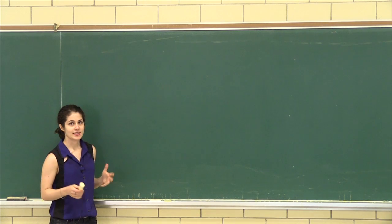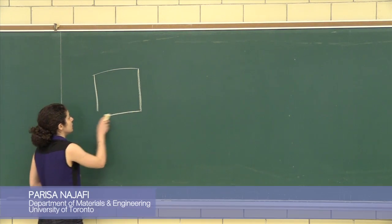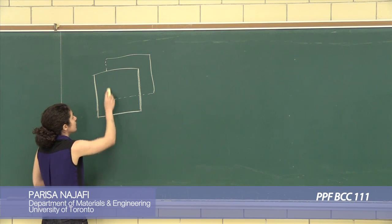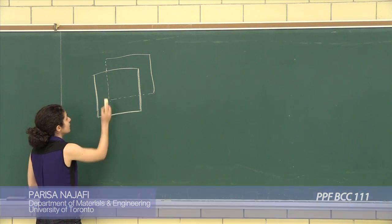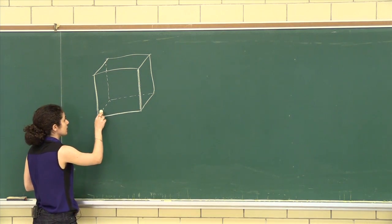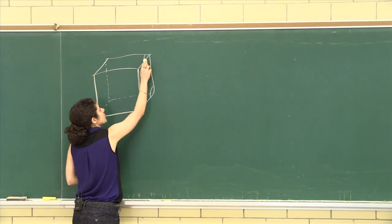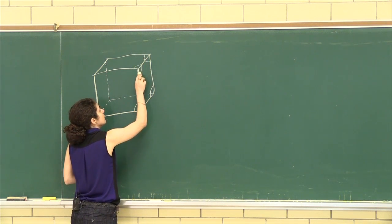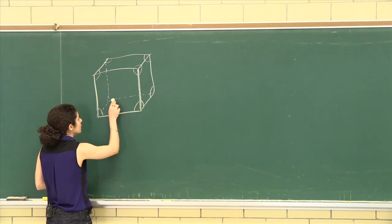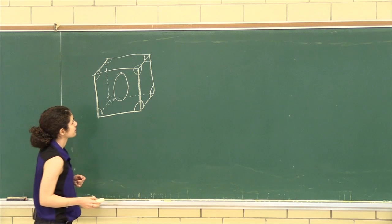So I'm going to start by drawing the BCC structure. And an eighth of an atom goes in each corner, and one atom is in the center.